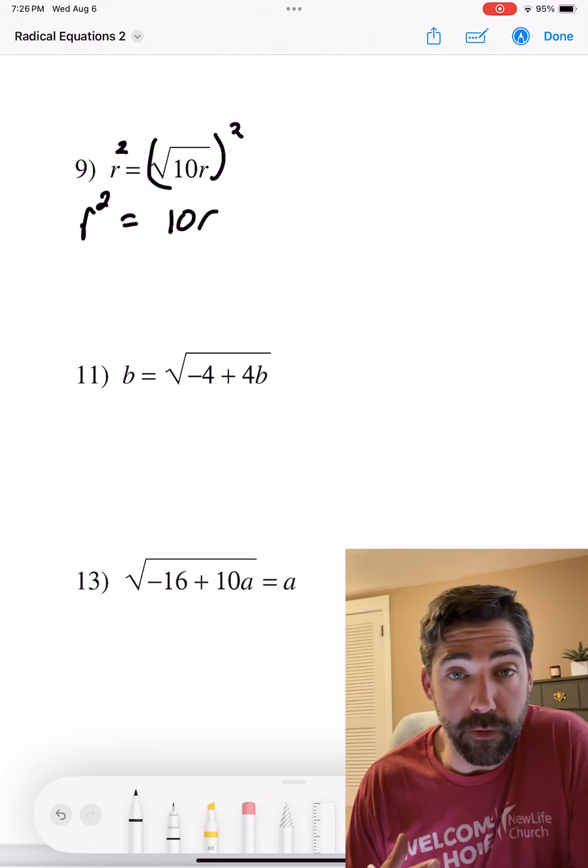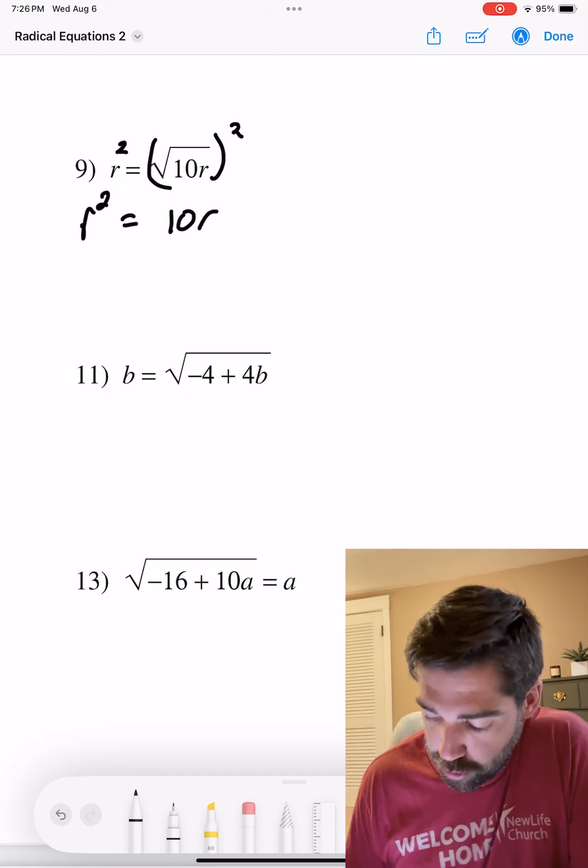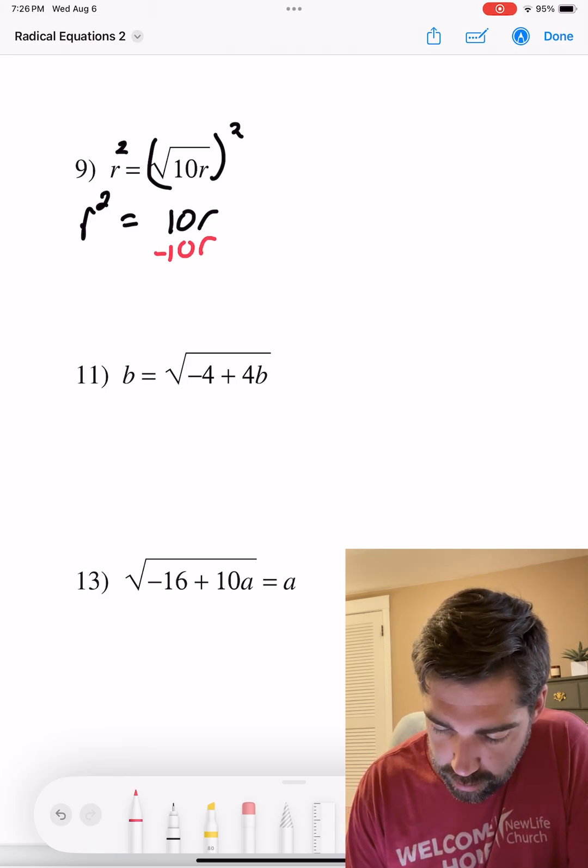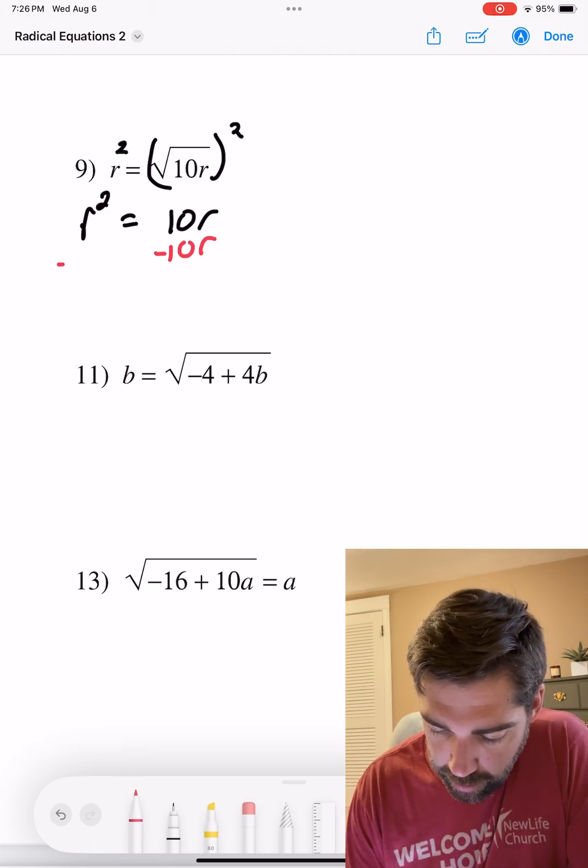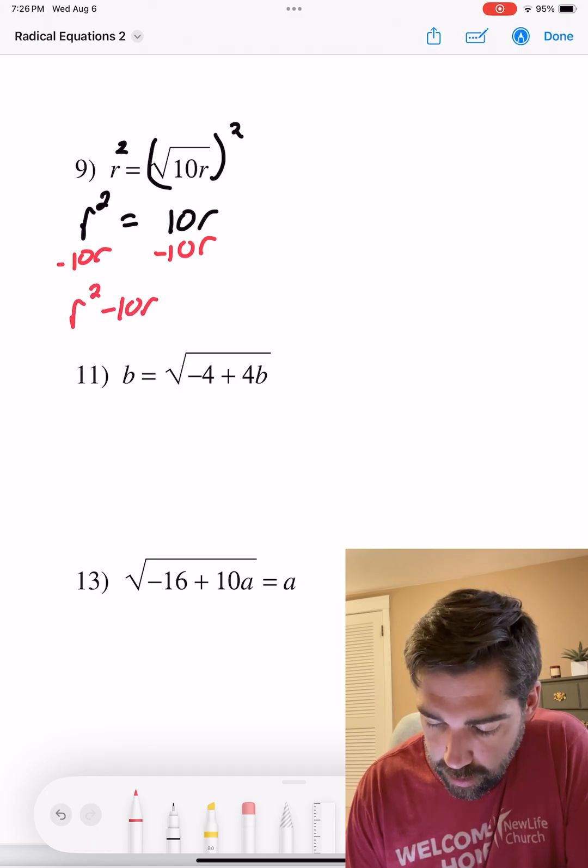Now we just need to solve for r. So I'm going to subtract 10r, subtract 10r. I get r squared minus 10r equals zero.